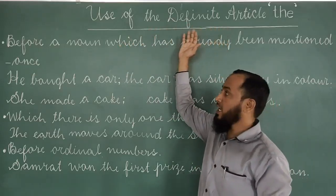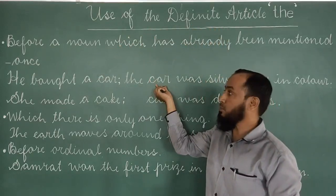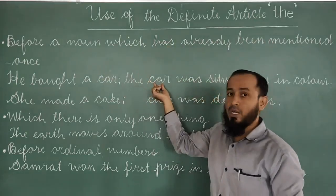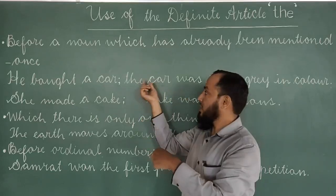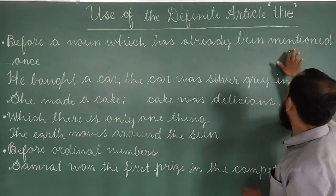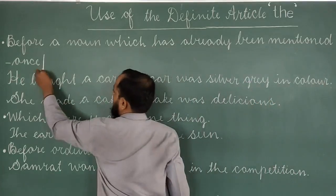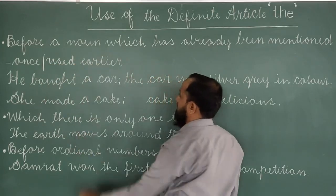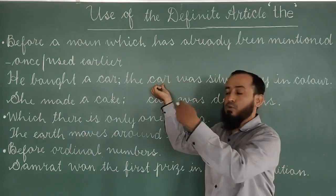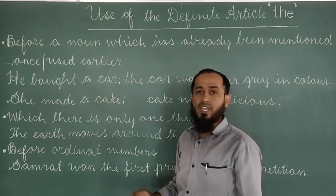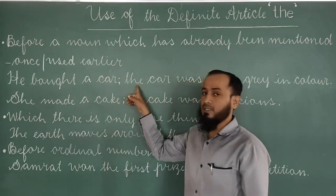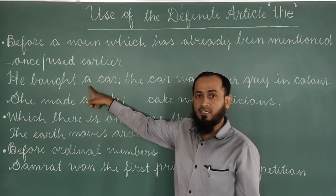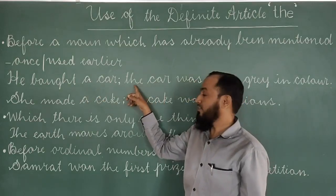The indefinite article 'a' is used before a noun the first time it is mentioned. Then 'the' is used before that same noun which has already been mentioned once — used earlier. In simple words, for the second time we have to use 'the'. Here 'car' is used for the first time with 'a', and for the second time with 'the'.